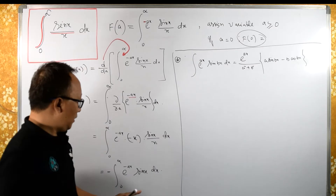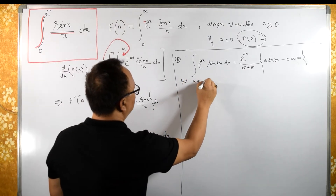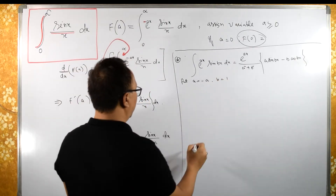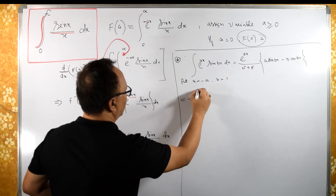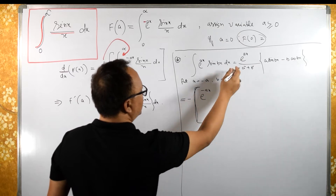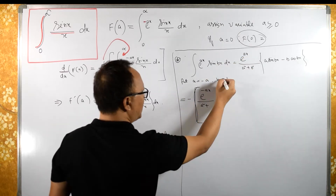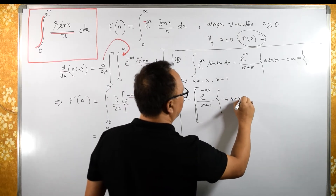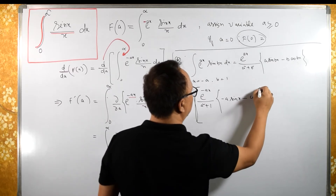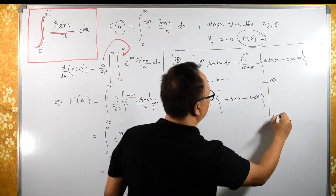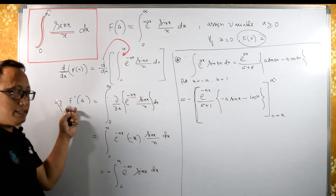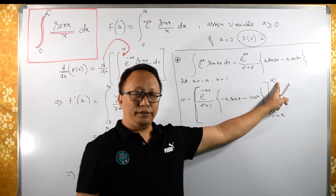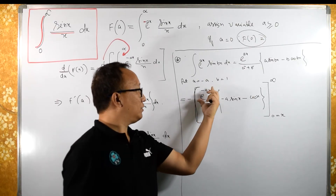Compare with this formula. Here we substitute −a in place of a, and since sin(x) means b = 1, we write b = 1. Therefore this integral becomes: minus e^(-ax) / ((-a)² + 1²) times [−a·sin(x) − 1·cos(x)], evaluated from 0 to infinity. Keep in mind the left-hand side is f'(a).